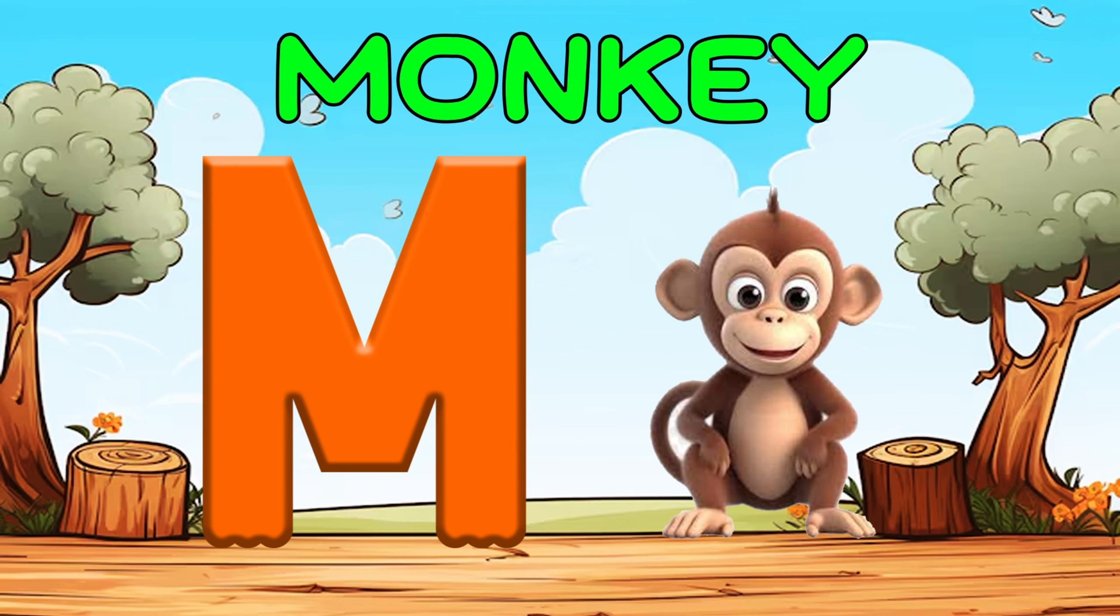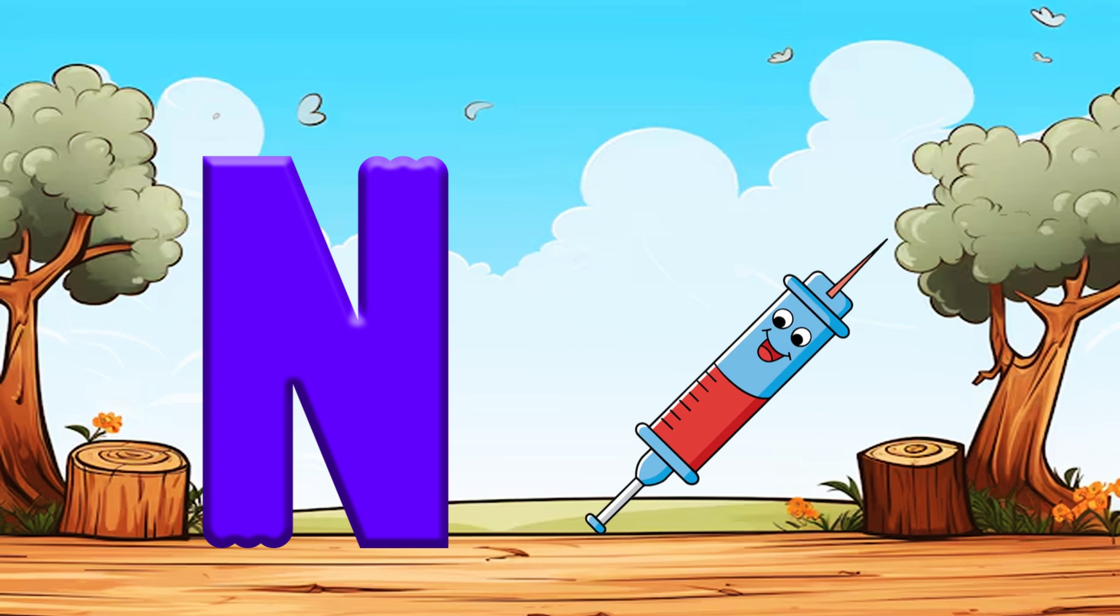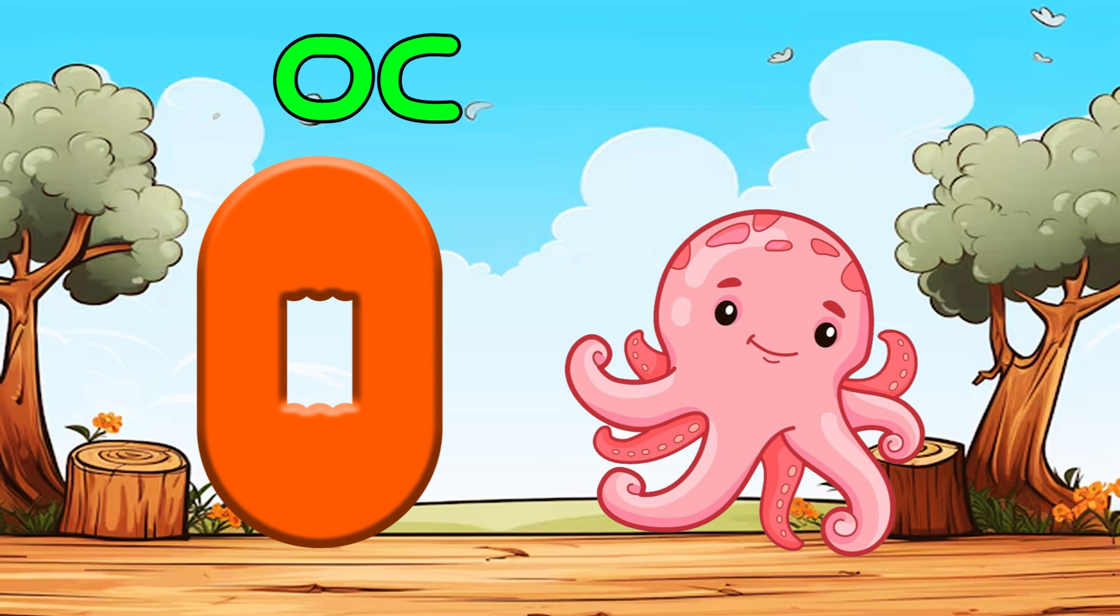M is for Monkey, Ma, Ma, Monkey. N is for Needle, Na, Na, Needle. O is for Octopus, A, O, Octopus.